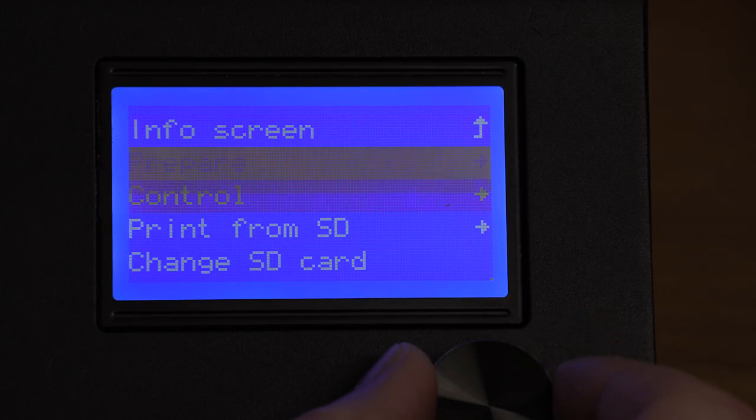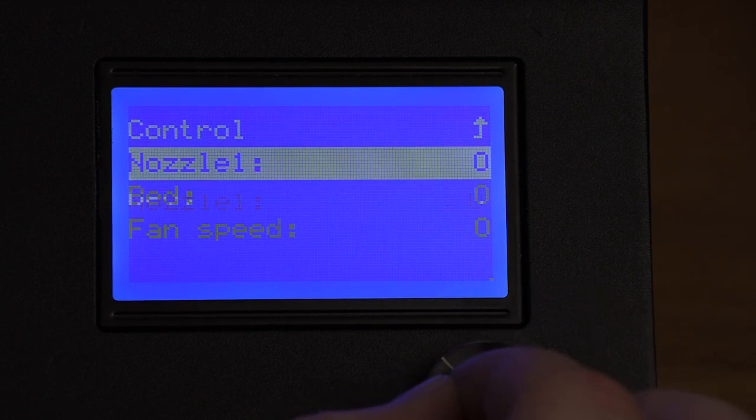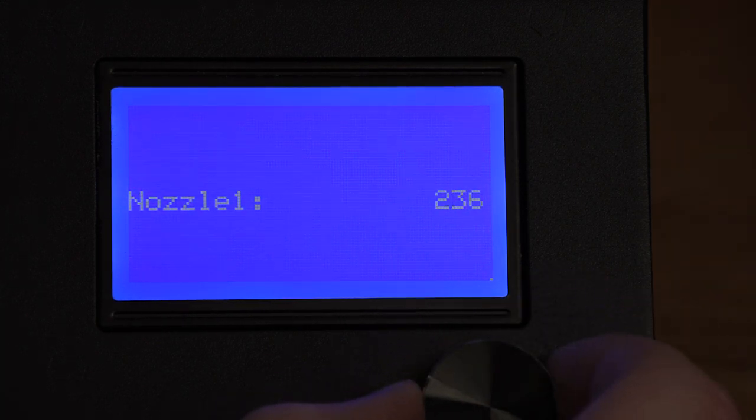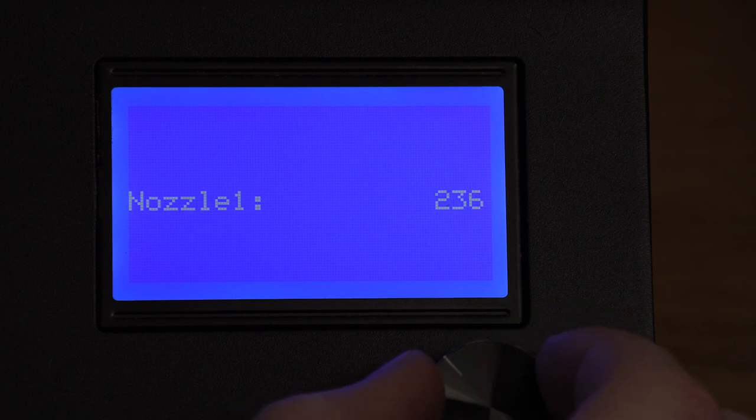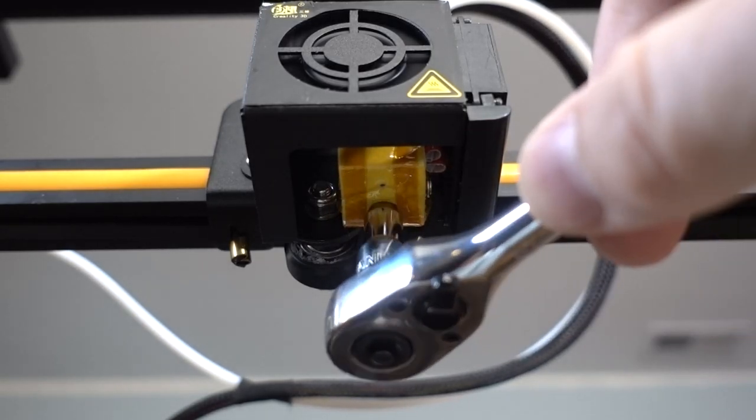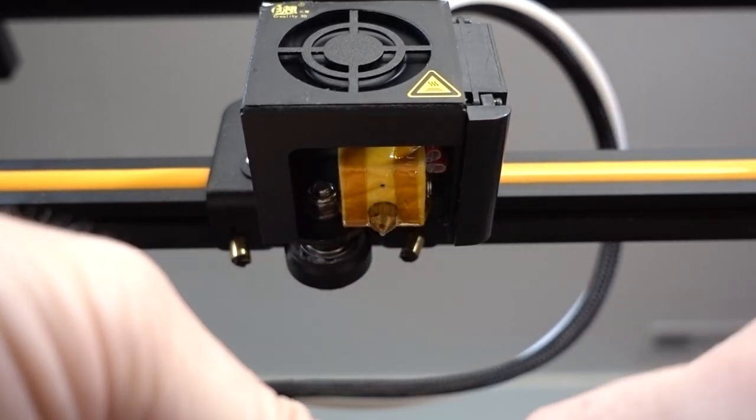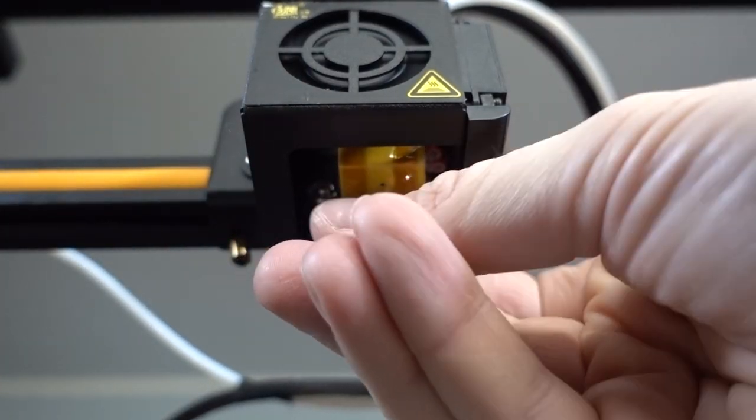The first step in installing this is preheating the nozzle to around 235C, give or take. Once everything is preheated, go ahead and use that 6mm socket to remove the nozzle from the heater block.